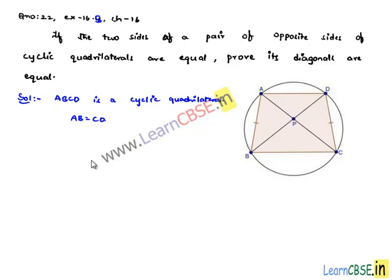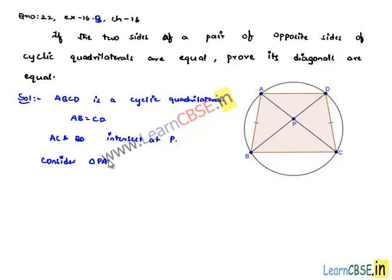In order to prove that, let us assume that AC and BD intersect at point P, which is the point of intersection of the diagonals. Now consider triangles PAB and PCD. In both these triangles, it is already given that AB is equal to CD.